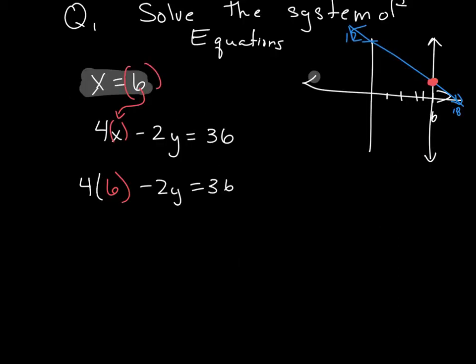4 times 6 gives me 24 minus 2y is equal to 36. I go ahead and I subtract 24 from both sides.